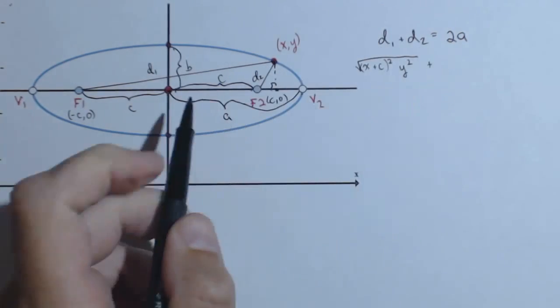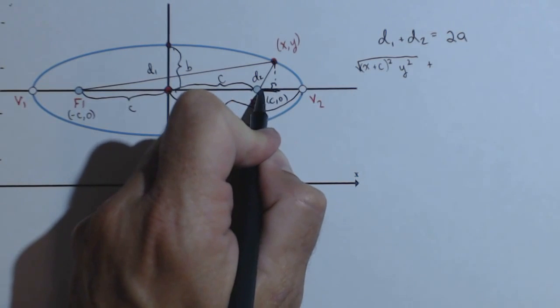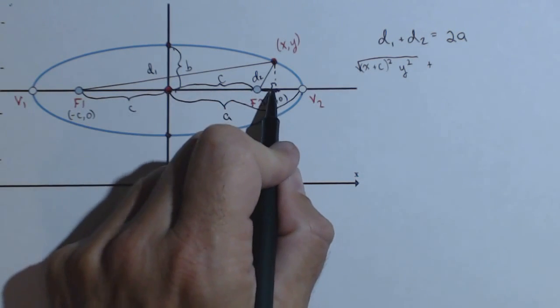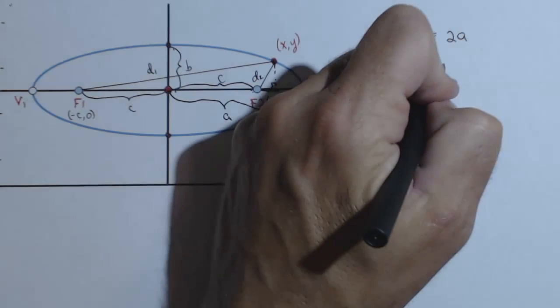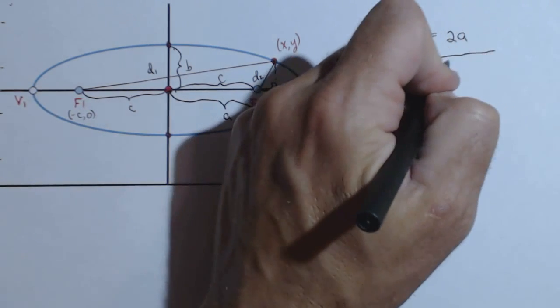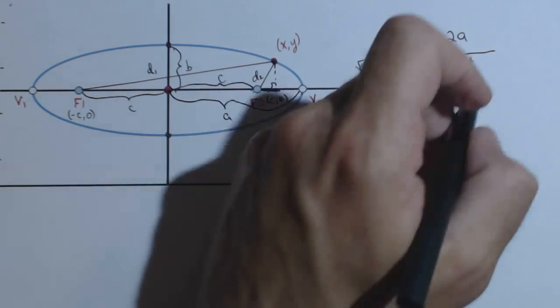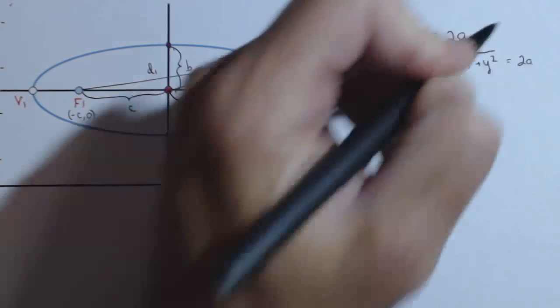Now, we need to do D2. It's going to be very similar, except D2, its bottom is just this little piece here. Again, we know from the center to here is X. From the center to here is C. So this distance is X minus C. So we have square root of X minus C squared. And again, this will be Y. So plus Y squared. And this needs to be equal to 2A.